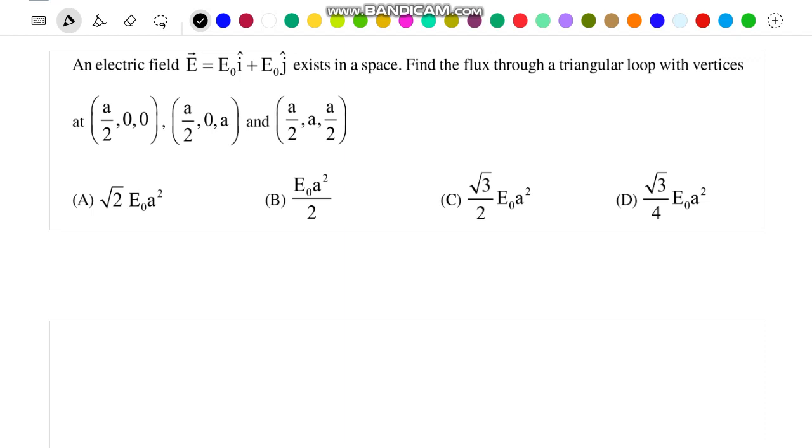We have to find the flux through a triangular loop with the given vertices, that is with points A, B and C as its vertices.